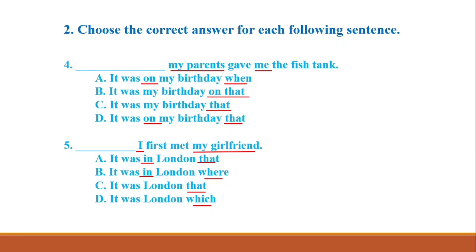Number four: 'my parents' is the subject and 'me' is the object — we're missing the adverbial. Eliminate A because it has 'when.' Eliminate B because it has 'on' next to 'that.' Between C and D, C has the preposition 'on my birthday' — we need a time marker for the adverbial, so the answer is D: 'It was on my birthday.' Number five: subject is 'I,' object is 'my girlfriend' — we're missing an adverbial. Eliminate D and B because 'where' and 'which' are not in the formula. Between A and C, a location needs the preposition 'in,' so the answer is A.